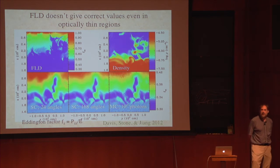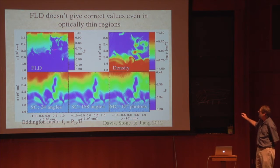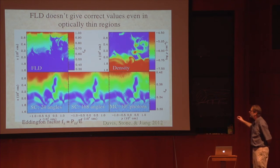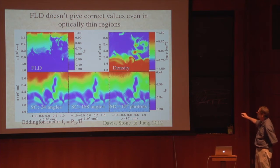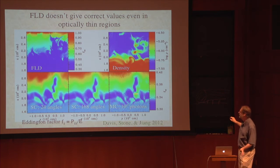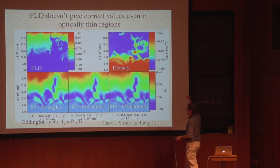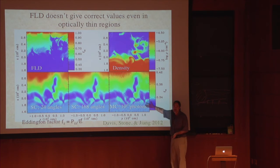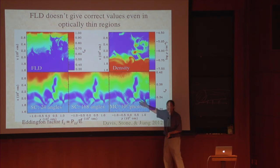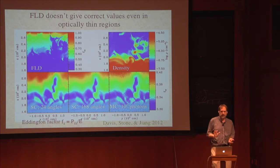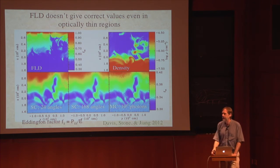As I showed before, the problem is FLD doesn't actually give you the right answer for problems you're really interested in. For the radiation-dominated accretion disc, the FLD solution is just not consistent with the actual solution. We know this because methods based on direct solution of the transfer equation agree with each other — very different methods are consistent — so we think that's the right solution and the FLD solution is not correct. For some problems FLD can be great, but for others it may not be, so you may need to check self-consistently.